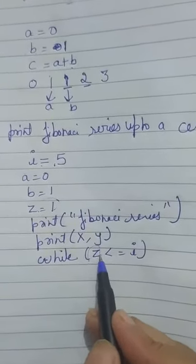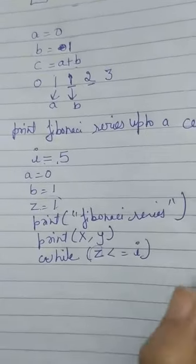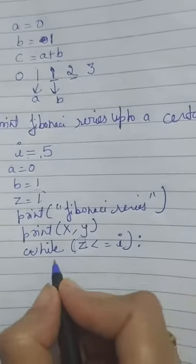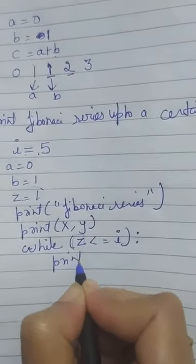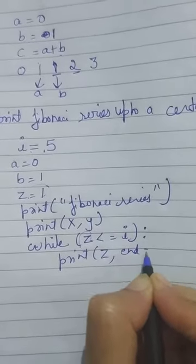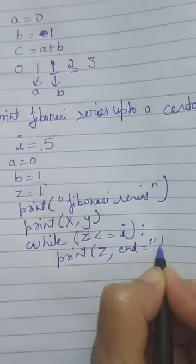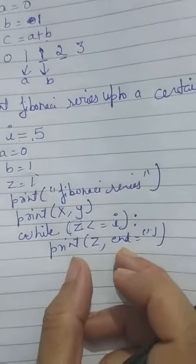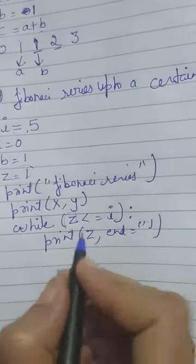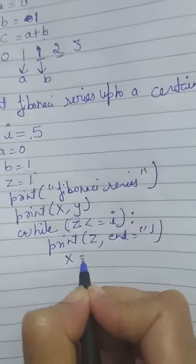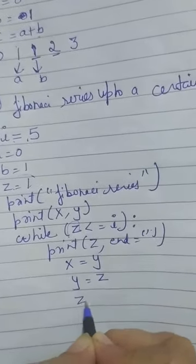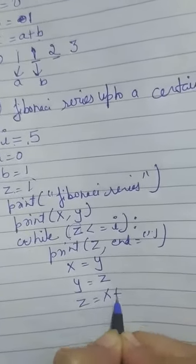The loop executes as long as Z is smaller than I. Print Z with a gap between the two values. Then we set X equals to Y and Y equals to Z.